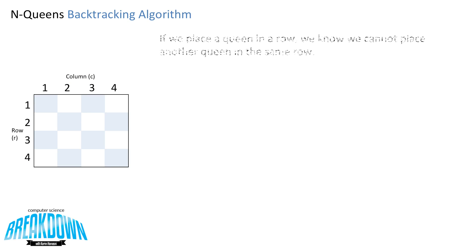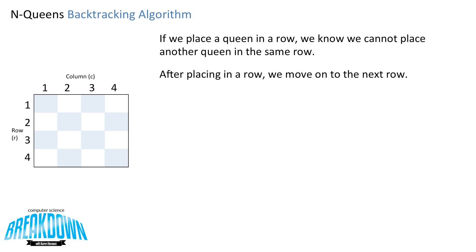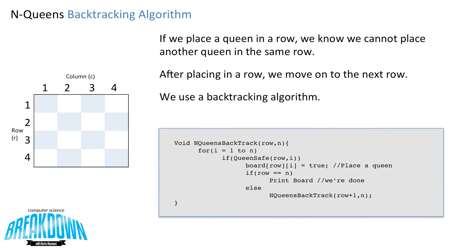So what do we know so far? If we place a queen in a row, we know we cannot place another queen in the same row. After placing a queen in a row, we move on to the next row. And to do this, we use a backtracking algorithm.